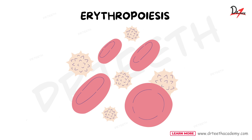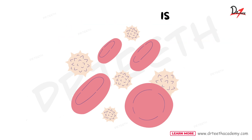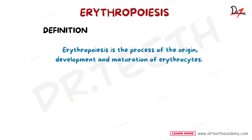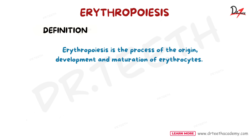Hello everyone, assalamu alaikum. In this video we are going to cover the process of erythropoiesis, that is the formation of red blood cells. Erythropoiesis is made up of two words: erythro means RBCs and poiesis means formation. By definition, erythropoiesis is the process of origin, development and maturation of erythrocytes.